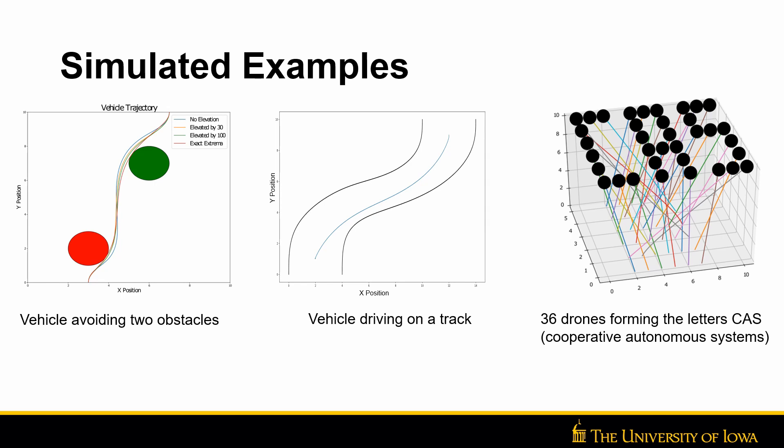The multiple lines in the first example show a tradeoff between computational time and a more exact answer. As the computational time increases, the trajectory converges to the minimum distance between obstacles.